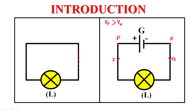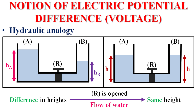We define a potential difference, or voltage, in other terms as energy — energy per unit charge — needed to move a unit charge from position 1 to position 2. This gives us the potential difference between these two points.